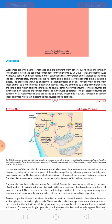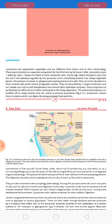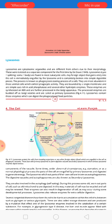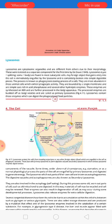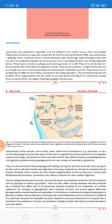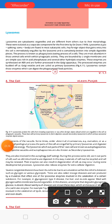The name 'lysosome' means 'splitting body' — organelles that can split and break things down. They are found in eukaryotic cells, as all membrane-bounded organelles are present in eukaryotic cells. Their function is that any foreign object that enters into the cell is immediately engulfed by the lysosome and completely broken into simple digestible pieces.